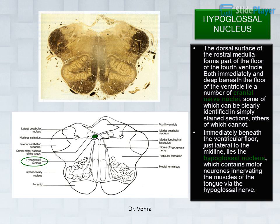The dorsal surface of the rostral medulla forms part of the floor of the fourth ventricle. Immediately and deep beneath this ventricular floor lie a number of cranial nerve nuclei. Immediately beneath the ventricular floor, just lateral to the midline, lies the hypoglossal nucleus, which contains motor neurons innervating the muscles of the tongue via the hypoglossal nerve.